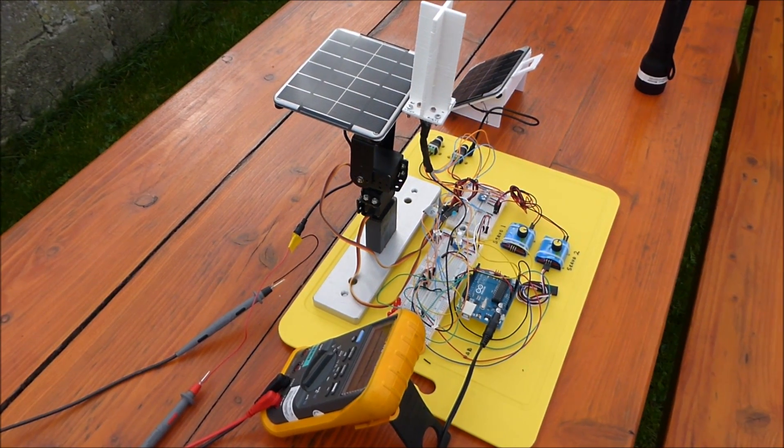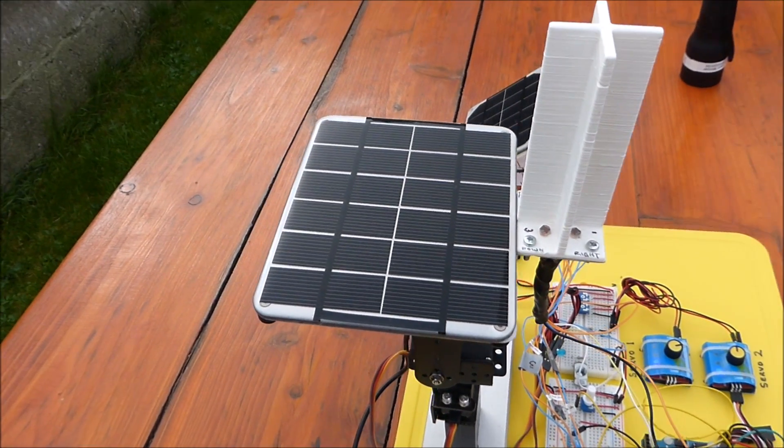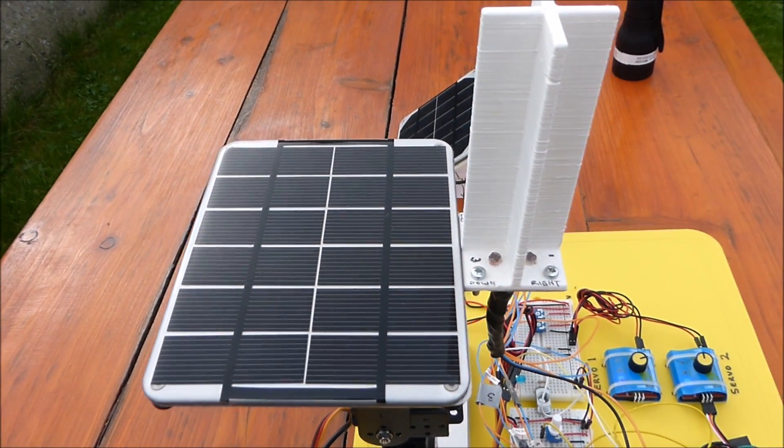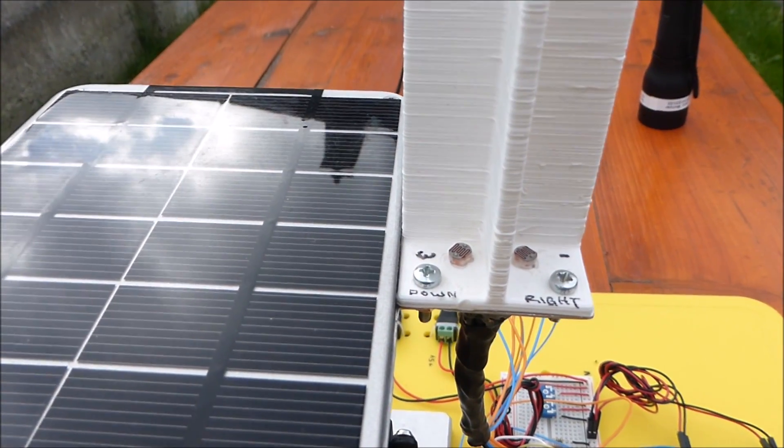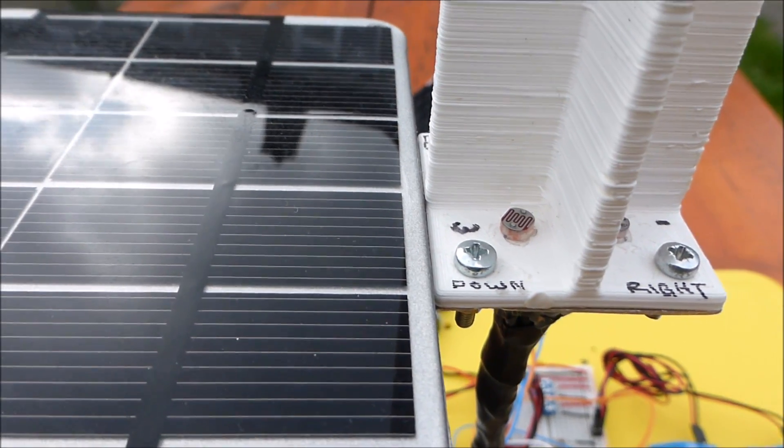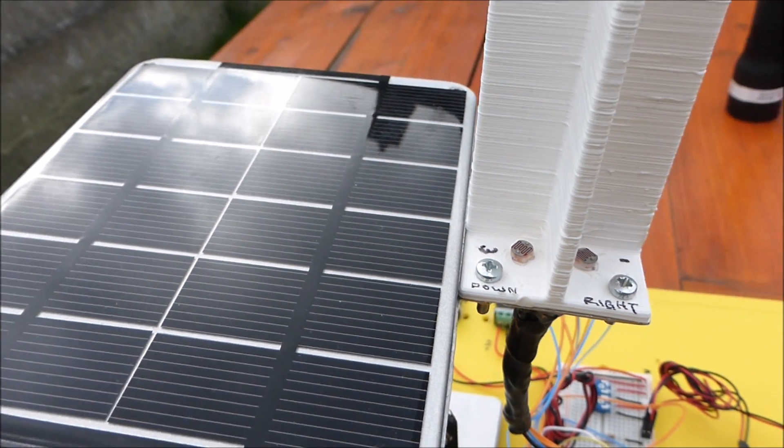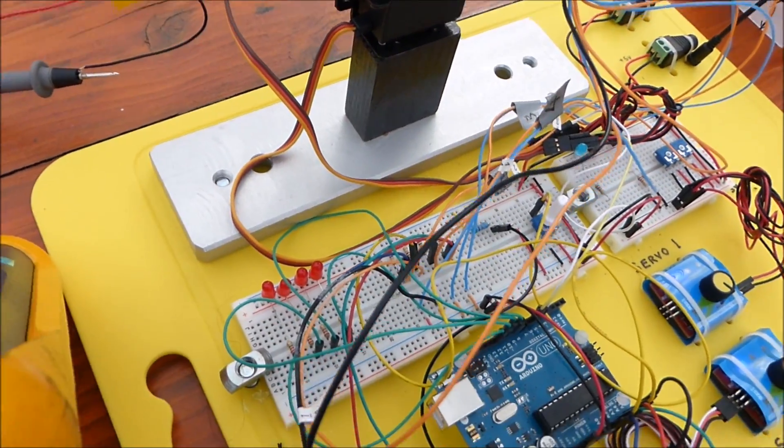So here we have our dual-axis solar tracker. The dual-axis solar tracker consists of our solar panel and our sensor system, which consists of four light-dependent resistors, one in each quadrant. Each light-dependent resistor then forms an input into our microcontroller.